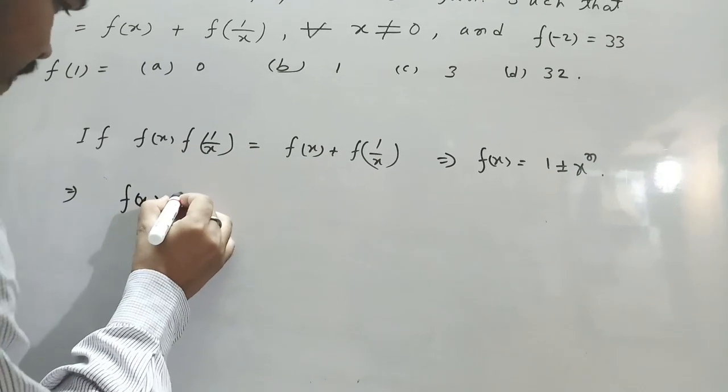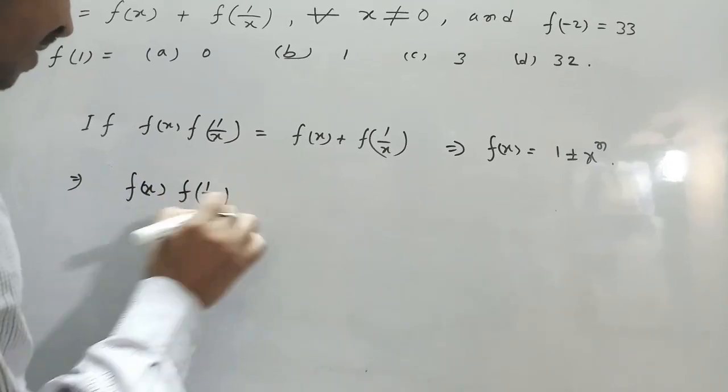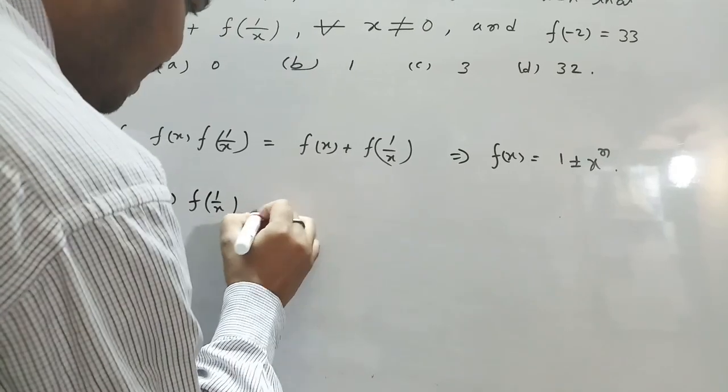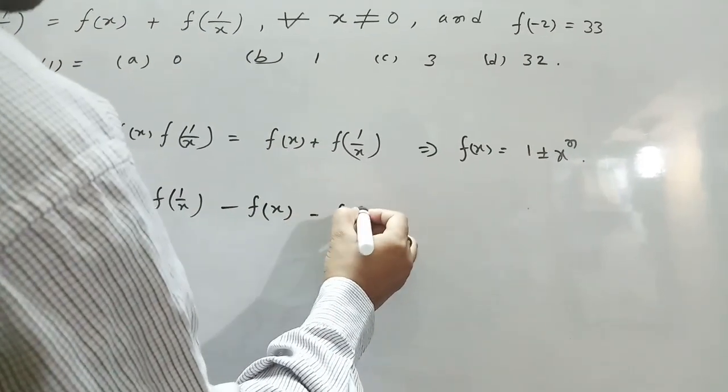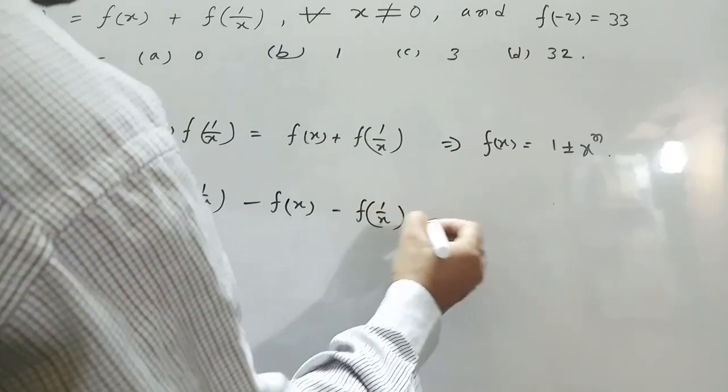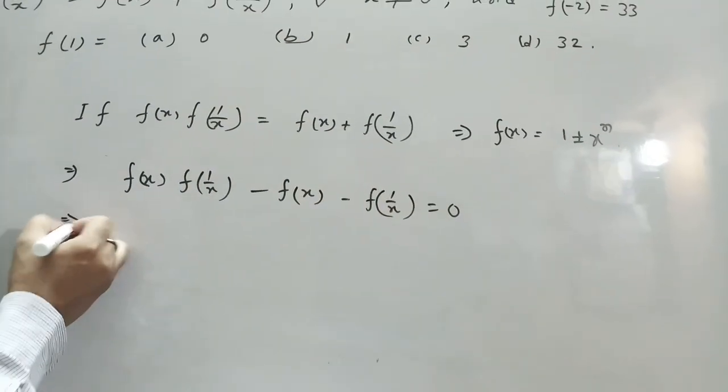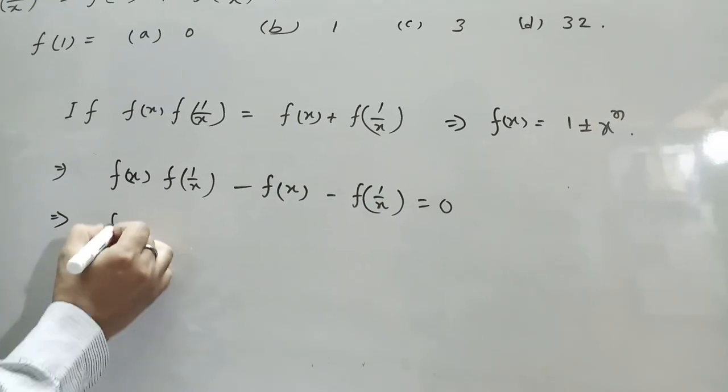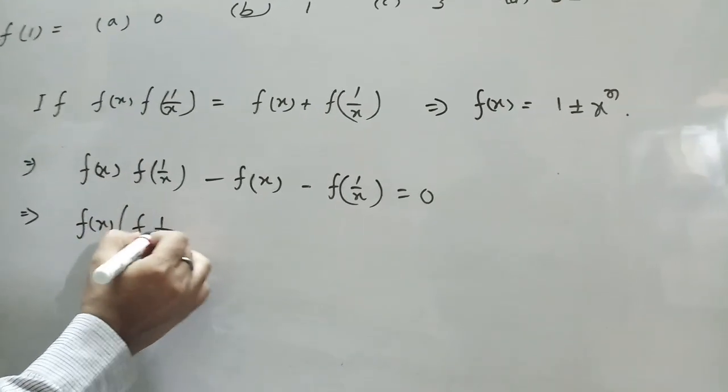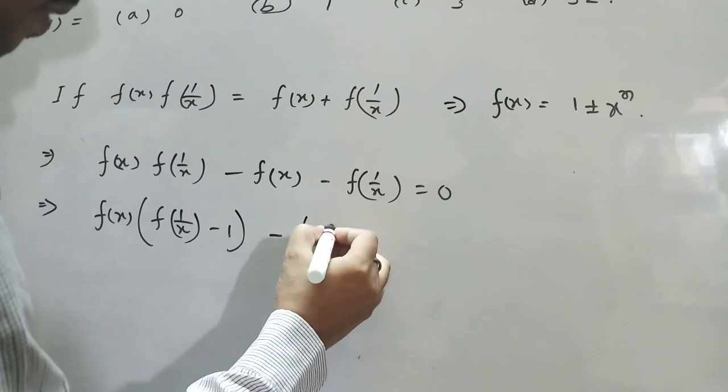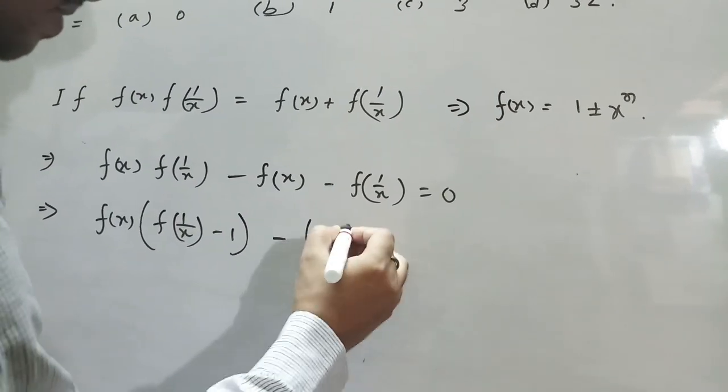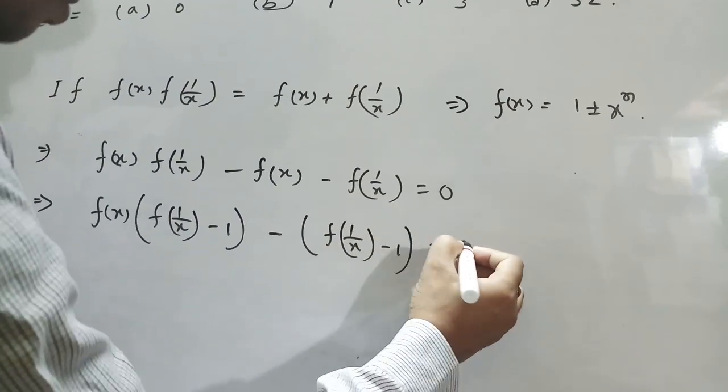From this we can say f(x)f(1/x) minus f(x) minus f(1/x) equal to 0. And take common f(x) then having f(1/x) minus 1 and f(1/x) minus 1 equals to 1.